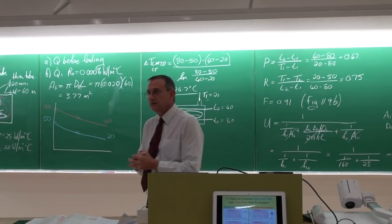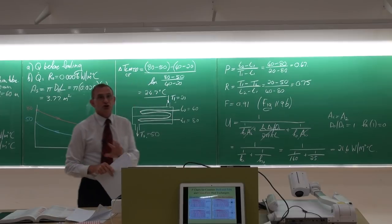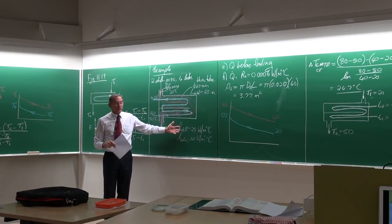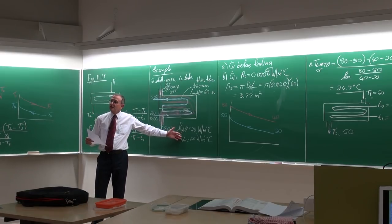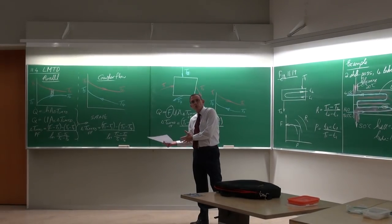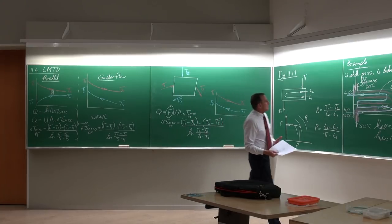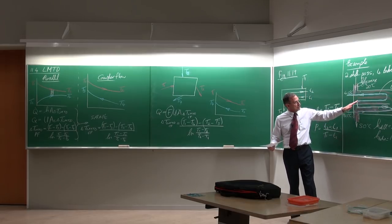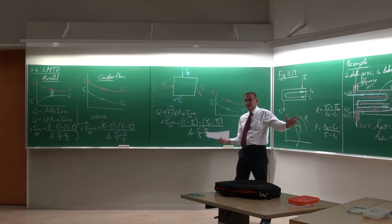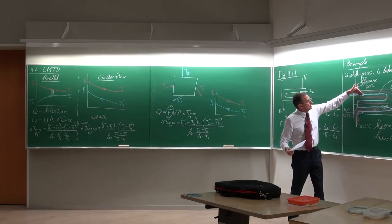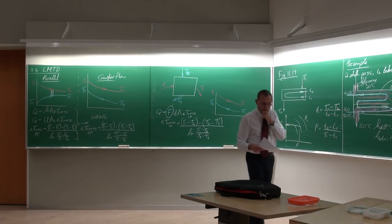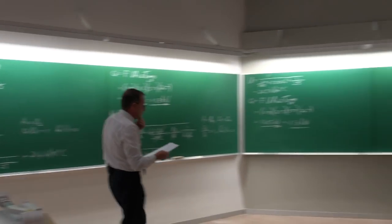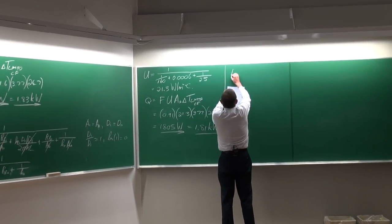In this problem we took a shortcut: the two heat transfer coefficients were given to us. In an exam I'm not going to be so kind — I will expect you to calculate them, so I can check the work you did in chapter 8 on internal forced convection. For the tube that is straightforward, but what do you do inside the shell where there is no equation available?